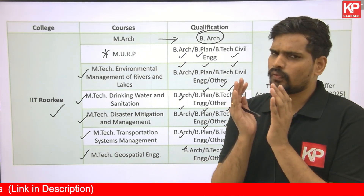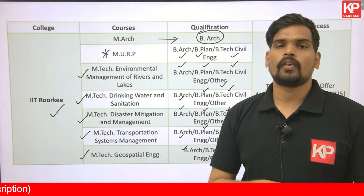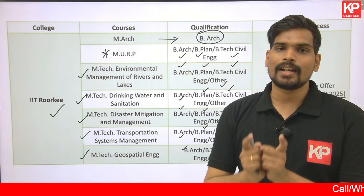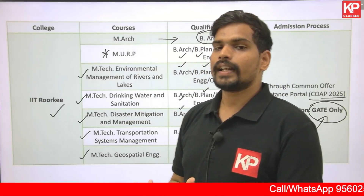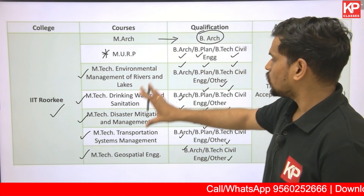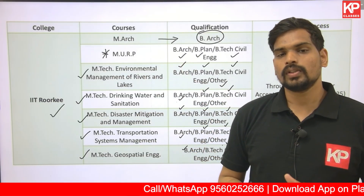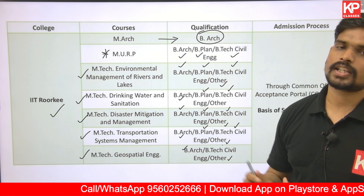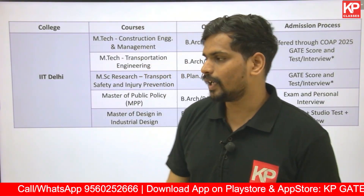For further clarity on any of these courses, visit the official IIT Roorkee website and check the PG Admissions Brochure for 2025, which provides specific criteria for all courses. I hope this gives B.Plan and B.Arch graduates a clear idea of which courses they are eligible for and the basis of selection at IIT Roorkee.